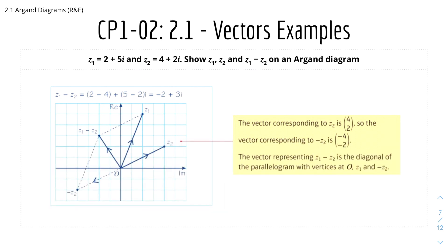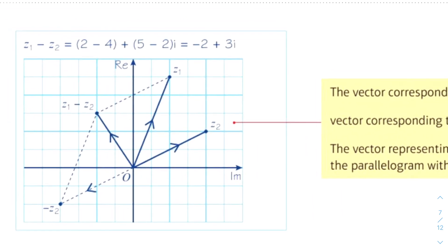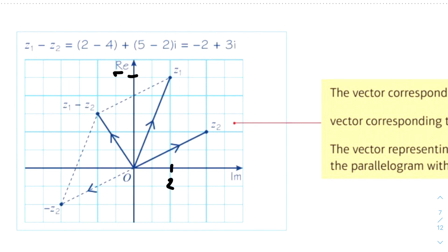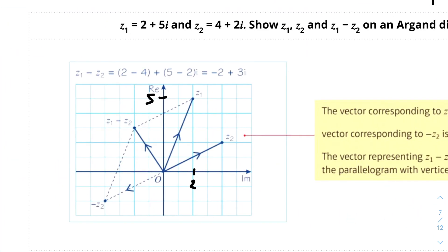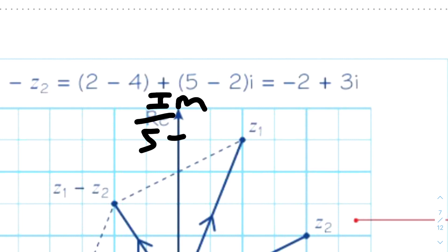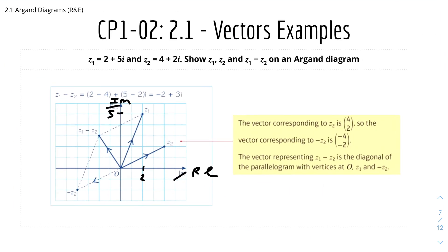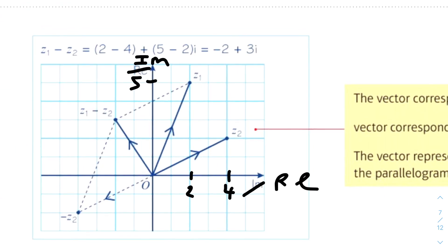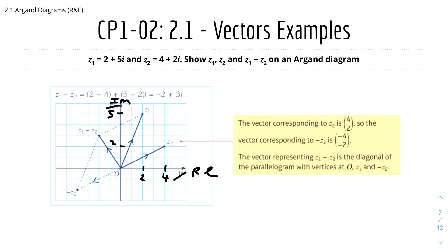The final example: z1 equals 2 plus 5i and z2 equals 4 plus 2i. Show z1 and z2. z1 is 2, 5, so this is 2 and this is 5. z2 is 4 plus 2i. Find z1 minus z2 on an Argand diagram. It's more difficult to use the head to tail method, so you can just use the vector method. The vector corresponding to z2 is 4, 2, so the vector corresponding to minus z2 is minus 4, minus 2. The vector representing z1 minus z2 is the diagonal of the parallelogram with vertices at O, z1 and z2.